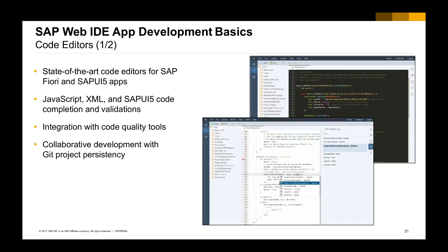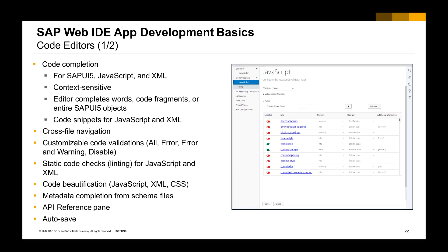SAP WebIDE provides a state-of-the-art code editor for development and coding. It supports JavaScript and XML modes with code completion and validation. You can integrate with a Git project for collaborative development, and the code completion covers the SAP UI5 library in both JavaScript and XML, with context-sensitive API reference for code snippets.